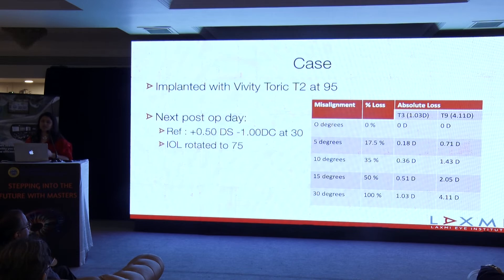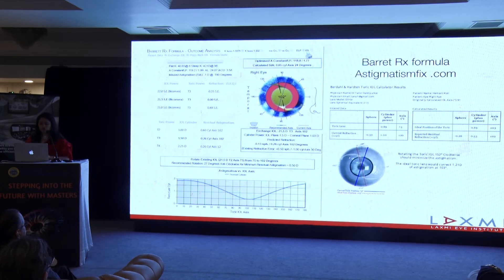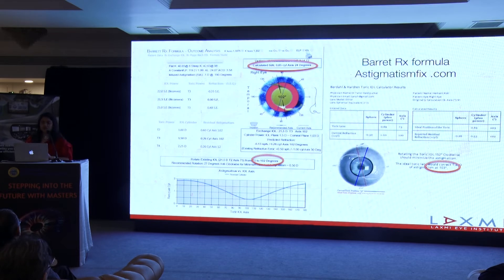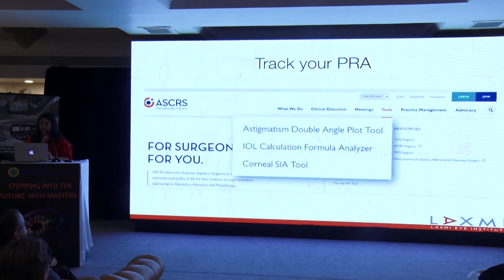I was supposed to put the lens at 95 degrees; the next day when I saw it, it had rotated to 75 degrees — almost 20 degrees away — and had lost almost 70% of its initial power. I went to the Barrett-Rx formula and the astigmatism fix to find a solution. Interestingly, I had induced an SIA of 0.8 in this case, and both calculators told me to dial the lens to 103 degrees, which reassured me. The calculators also gave an option of IOL exchange, but I chose to rotate the same lens. I did that after 2 weeks and the patient next day was 6/6 and suitably happy.